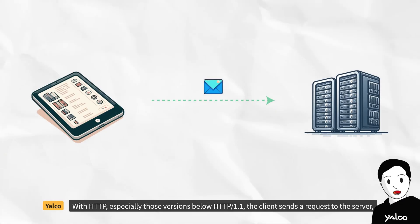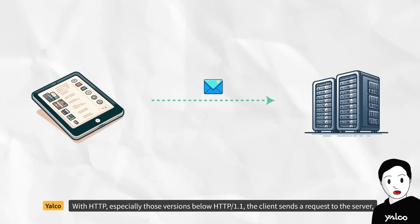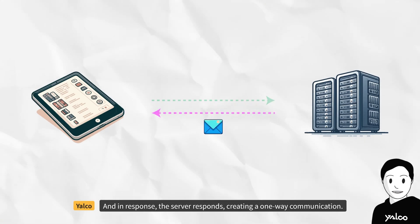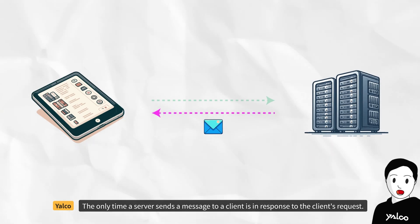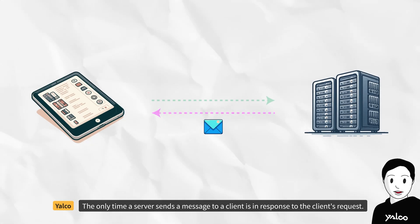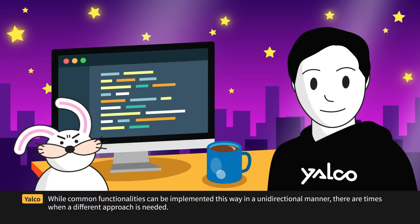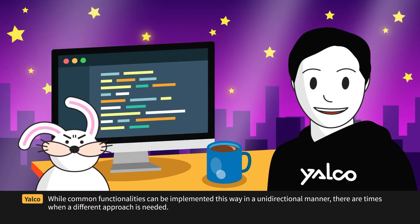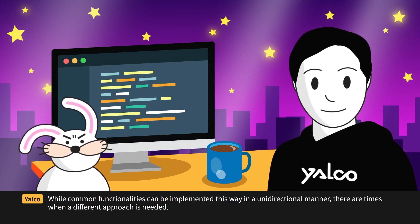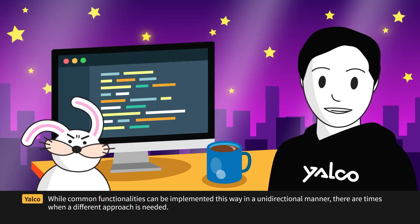With HTTP, especially versions below HTTP 1.1, the client sends a request to the server, and in response, the server responds, creating a one-way communication. The only time a server sends a message to a client is in response to the client's request. While common functionalities can be implemented this way in a unidirectional manner, there are times when a different approach is needed.